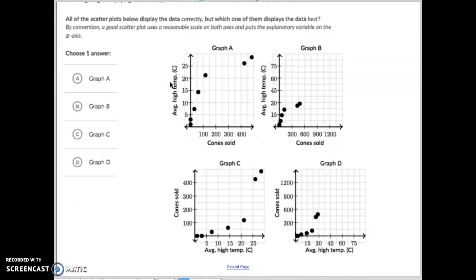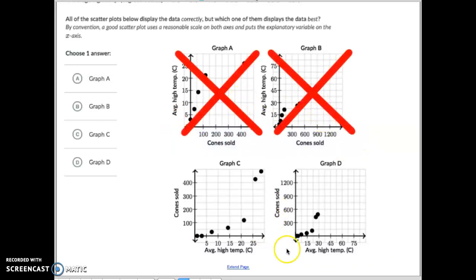So when we go down here and look at four graphs, average daily high for these two are the x-axis. And these two say the cones are the x-axis. So we know they're not those two because we want the average daily high.